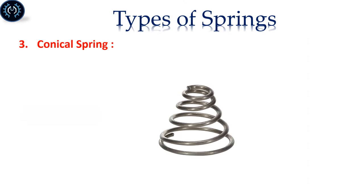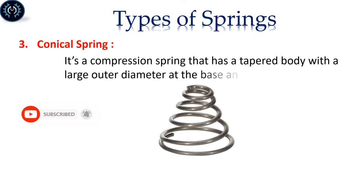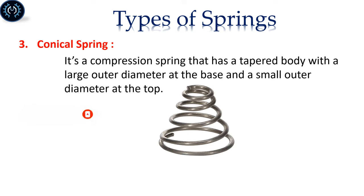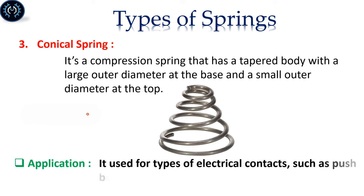Conical Spring: It's a compression spring that has a tapered body with a large outer diameter at the base and a small outer diameter at the top. It is used for types of electrical contacts, such as push buttons and battery contacts.